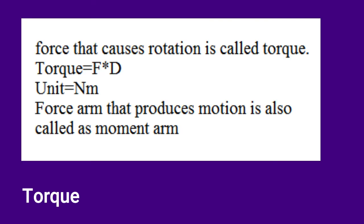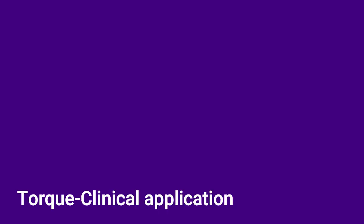Now that we've seen motion, let's look at how that motion is produced and what it is called. The force that levers produce which causes rotation at a joint is called torque. Mathematically, it is the product of force and the length of the force arm, so torque is expressed with the unit newton meters. This force arm is clinically referred to as moment arm. The thumb rule here is: a longer moment arm produces more torque.